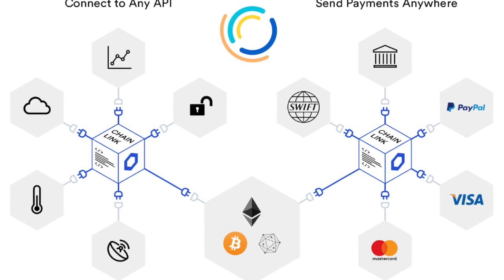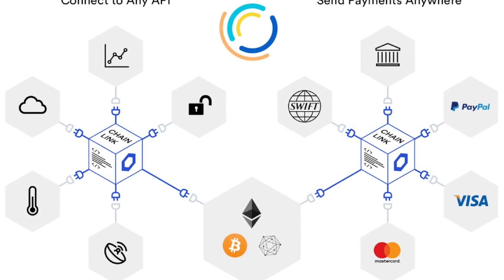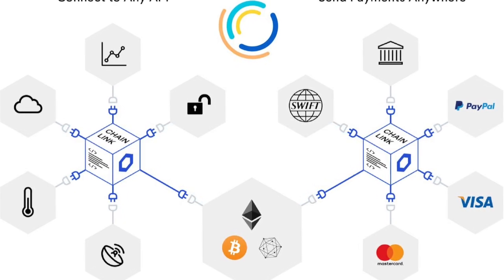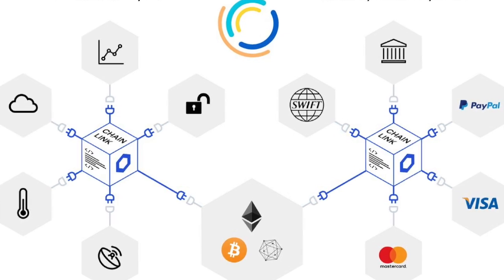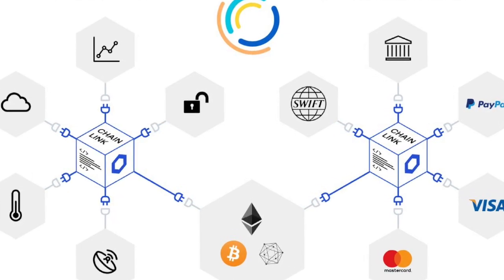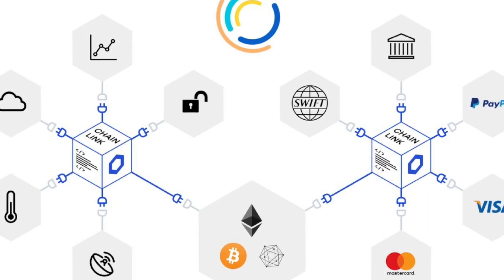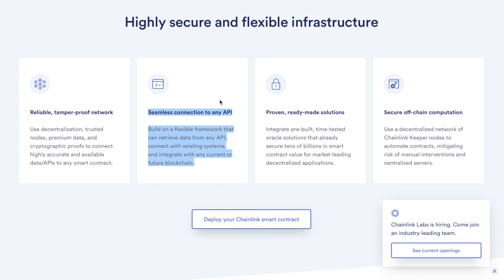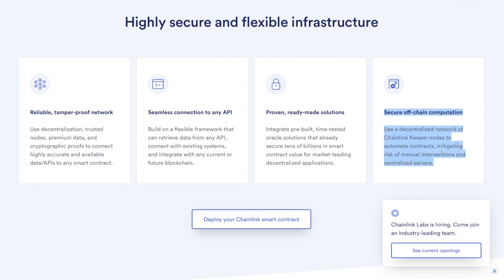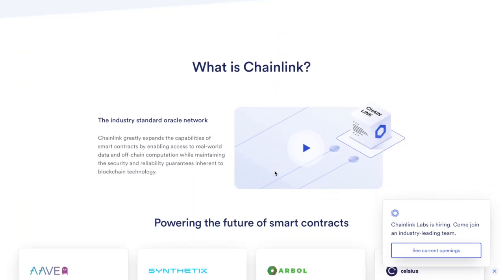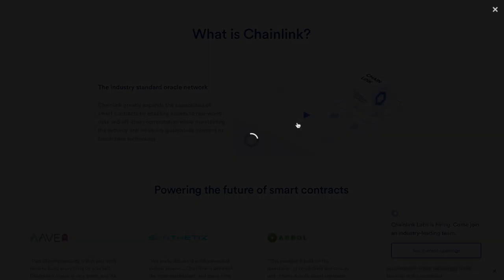However, an issue that has persisted is that most smart contracts need to rely on some kind of external data source to properly execute their terms. For example, smart contracts seeking to replicate bonds or insurance agreements may need access to APIs reporting on market prices or Internet of Things data. Chainlink was created to address this issue by incentivizing data providers called oracles to act as a bridge between blockchain smart contracts and external data sources.